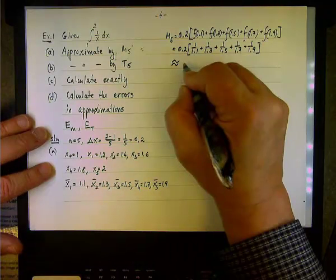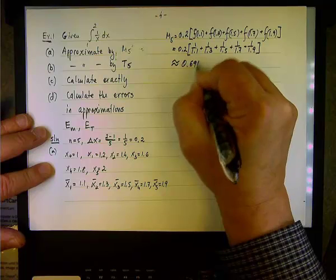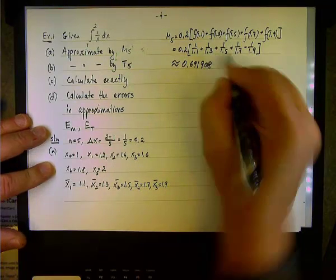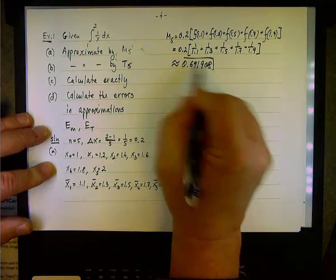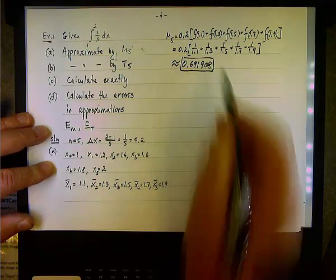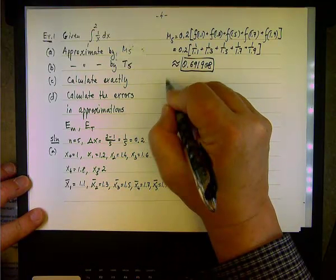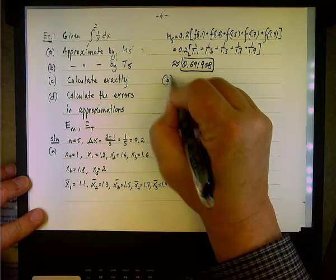And come up with the following value. This turned out to be 0.691908. Apparently somewhere in the instructions you are told to calculate to the 6 decimal place.